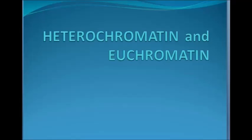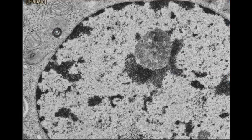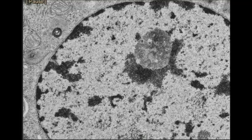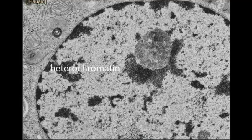Before talking in detail, I just want to show you this picture. This is an electron microscopic picture of a cell, and what you are seeing here is the nucleus. Inside this nucleus you can see a darkly stained, condensed portion and a lightly stained portion. The darkly stained and condensed portion is your heterochromatin, and the lightly stained portion is euchromatin.